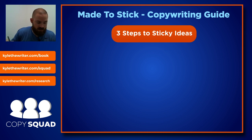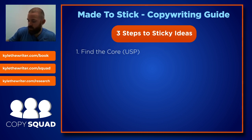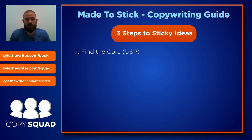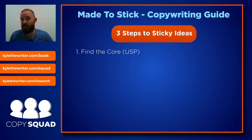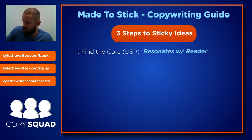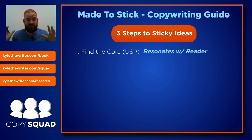Three steps to sticky ideas. The first one is: find the core. Basically, they talk about the lead inside this book — like when journalists write a report, they need to figure out what the most important part of the story is. It has to be something that is relevant and important to the reader, so you have to know your audience first. The core is that unique thing about your message that is especially important to your reader — it resonates with the reader. By definition, to be the core message, it has to resonate with the reader; it has to be something they care about and will pay attention to.